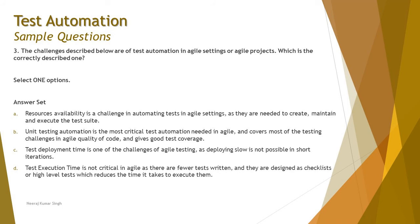Option B: unit testing automation is the most critical test automation needed in agile and covers most of the testing challenges in agile code quality as well as gives good code test coverage. Unit test automation is of course critical because most time in agile is spent on unit testing, but it does not cover most of the code quality — quality is also defined at system levels and non-functional levels, so we are not limited to unit testing when defining quality.